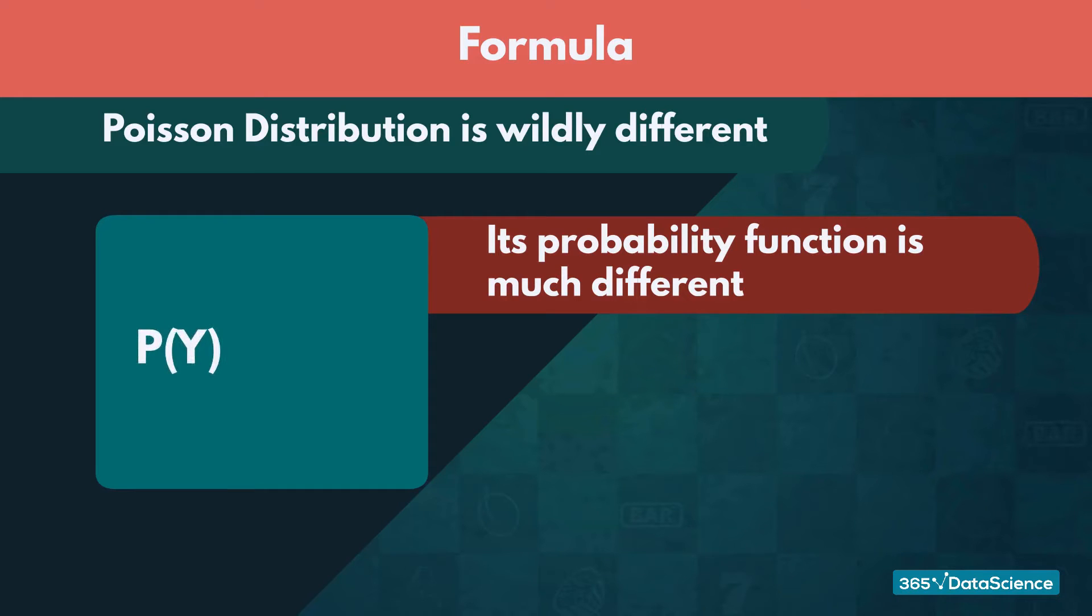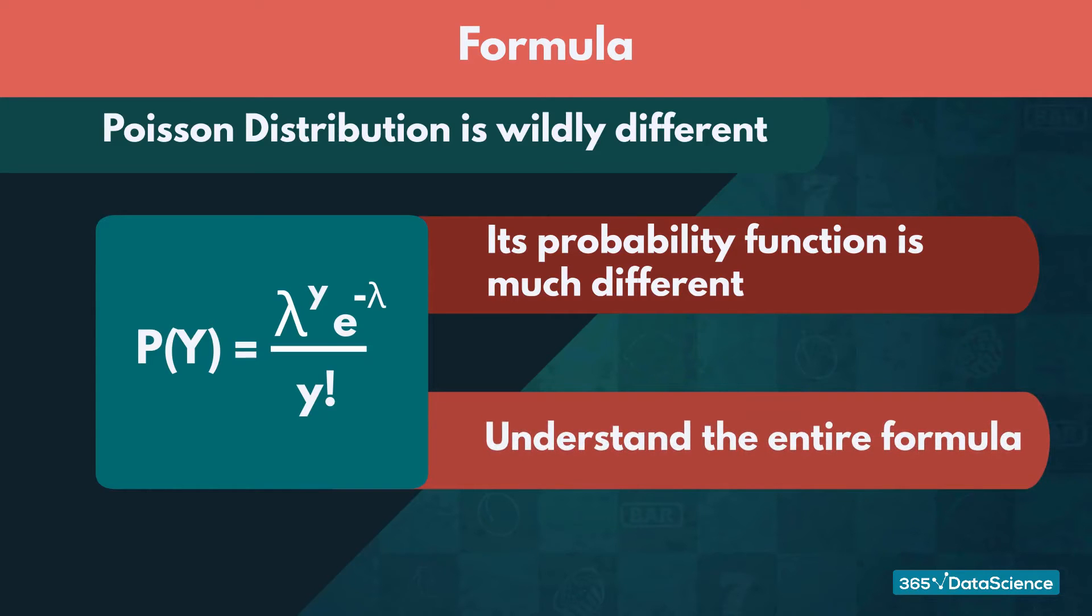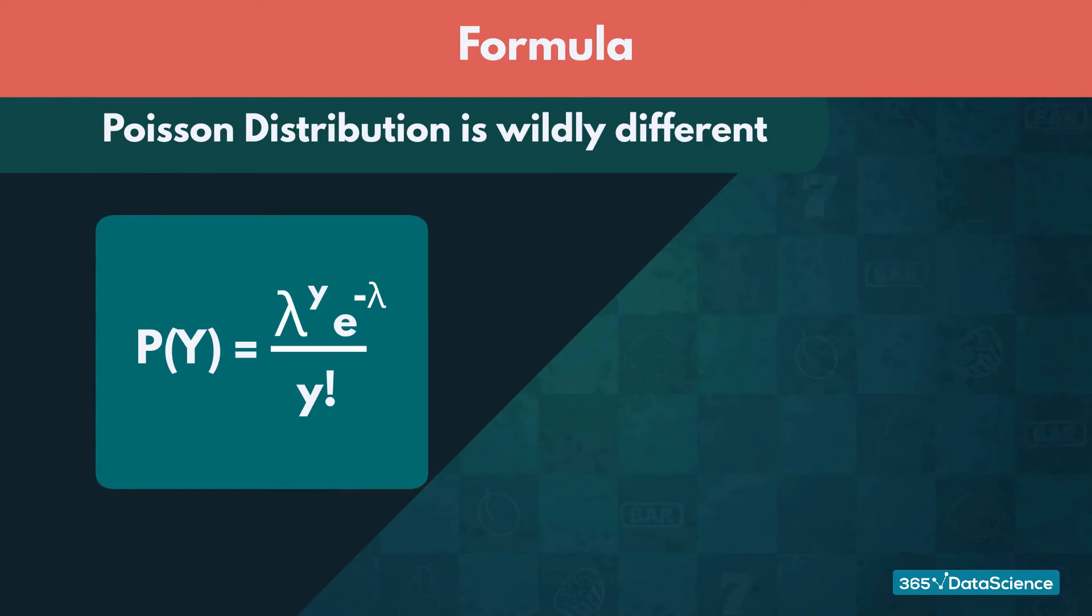P of y equals lambda to the power of y times the Euler's number to the power of negative lambda over y factorial. Before we plug in the values for our course creation example, we need to make sure that you understand the entire formula. Let's refresh your knowledge of the various parts of the formula.